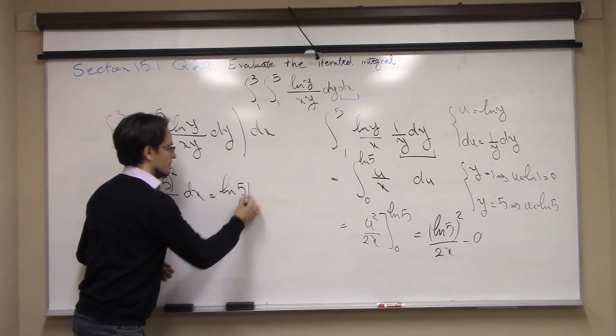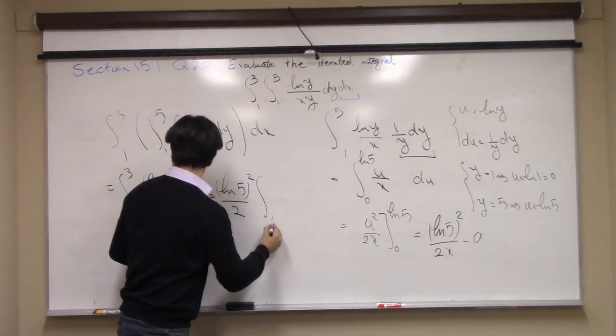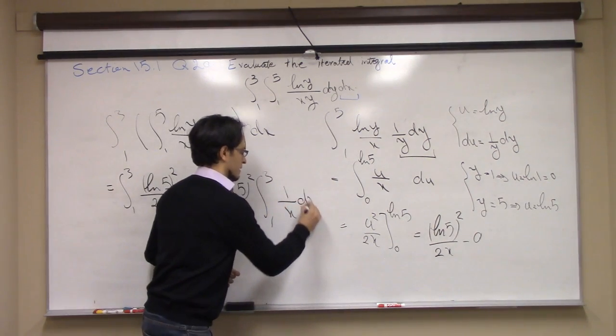ln 5 squared over 2 is constant. I take that out. I go from 1 to 3, 1 over x dx.